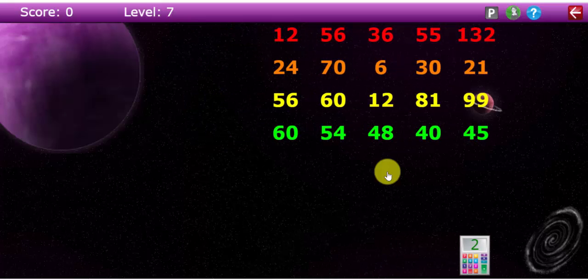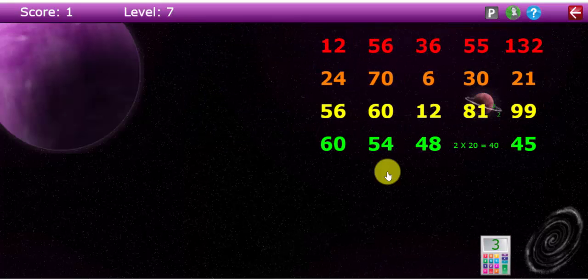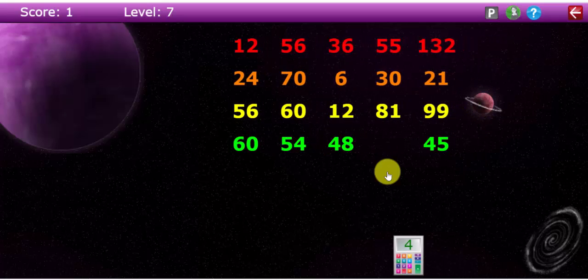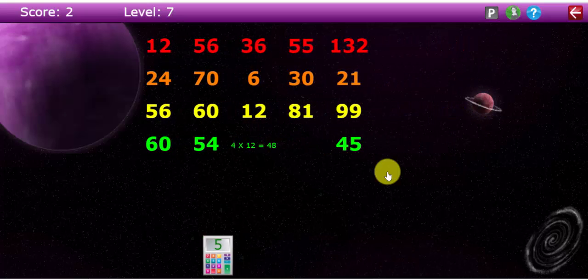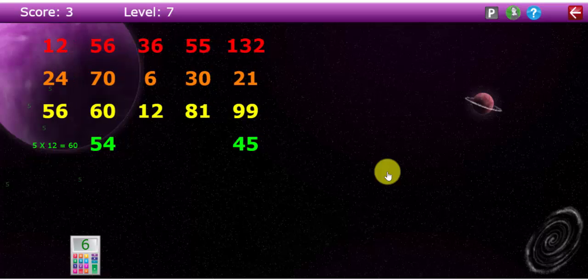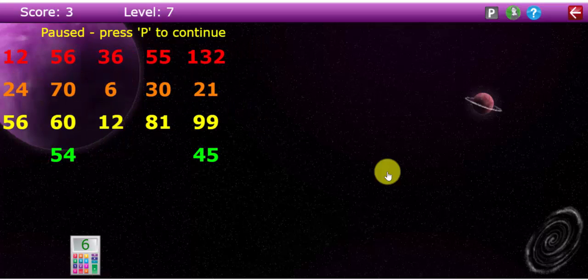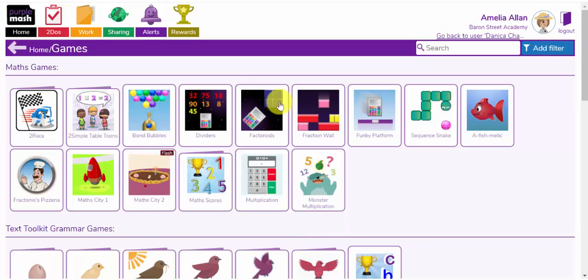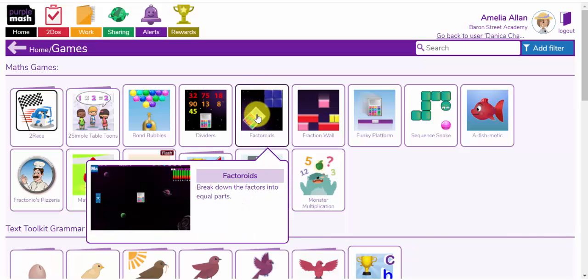So I've got a multiple of 2. So as you can see, you can increase the complexity and the numbers get larger and larger as you move up through the levels. Let's have a look now at this fabulous game called Factoroids.